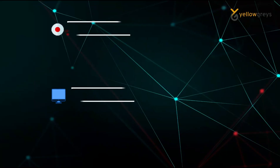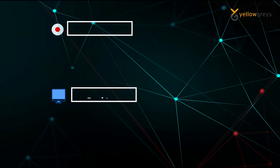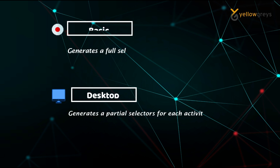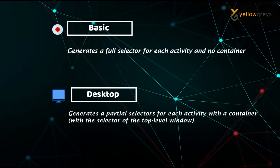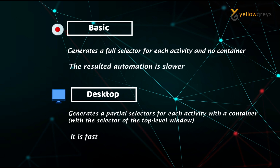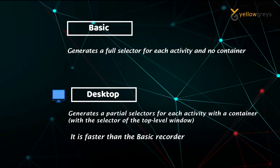Recap: Basic recording generates a full selector for each activity and no container, and the resulting automation is slower. Desktop recording generates a partial selector for each activity with a container holding the top-level window selector, and it is faster than the basic recorder. In the next video, I will cover the remaining recording types. Thanks for watching — connect with us for more tutorials.